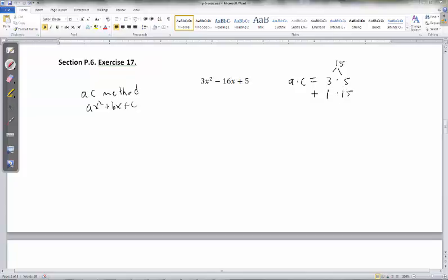is find a factoring pair of this 15 that adds to be the middle number. Since it's a positive 15, both the numbers and the factoring pair are going to have to have the same sign because they have to both be positive or both be negative. 3 and 5 do not add up to be 16, but 1 and 15 do. So that's the factoring pair I want. And they've got to add up to be negative 16, so I'm going to make it negative 1 and negative 15. Those still multiply to get positive 15, but they will add to get the negative 16 I want.